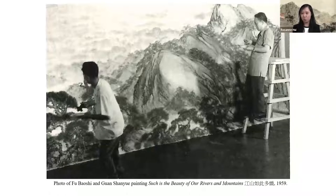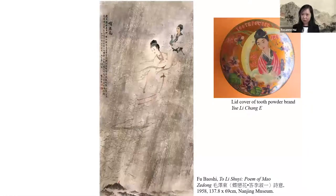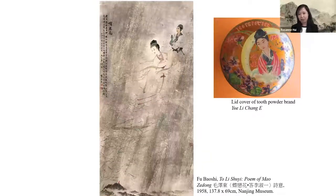Guan Shan Yue was arranged to assist Fu Baoshi. When Zhou Enlai and other officials first inspected the piece, they criticized it because they thought the sun was too small. The painting was subsequently revised just in time for National Day on October 1st, 1959. Fu Baoshi was not satisfied with the outcome and wanted to further revise it, but was told to let it go. This commissioned work illustrates how artists had to balance artistic creation while catering to officials who often had little knowledge of art.